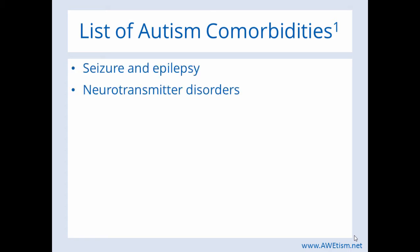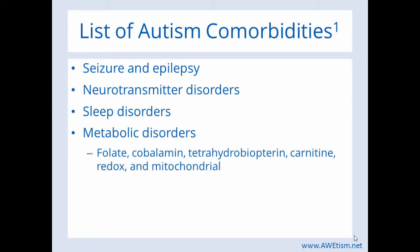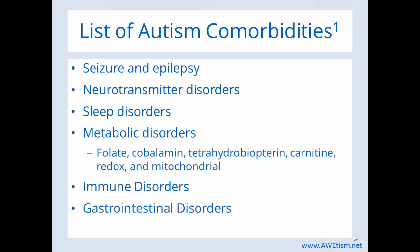Here's a list of well-accepted autism comorbidities: seizure and epilepsy, neurotransmitter disorders, sleep disorders, metabolic disorders — and today we're going to touch upon the fourth one, carnitine — immune disorders, and gastrointestinal disorders. These are all comorbidities. So if you're going for an optimal outcome for your child with autism, these are all the things that need to be thought about, and you need to make sure that if your child has any of these comorbidities, that you're treating them.